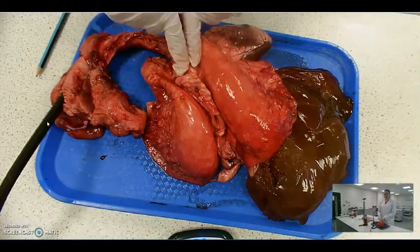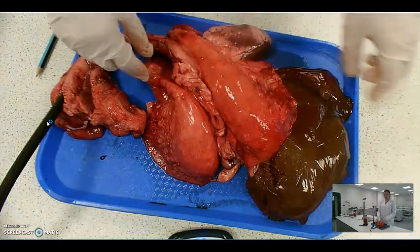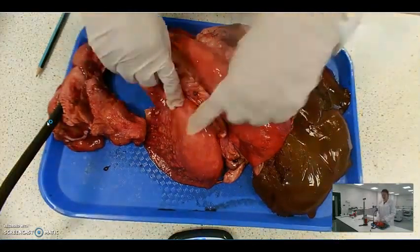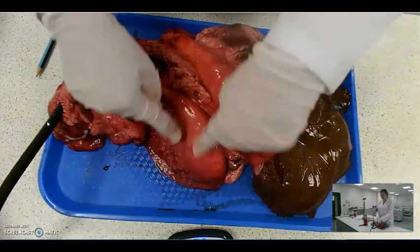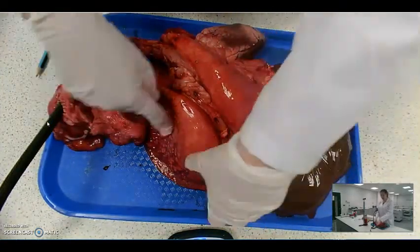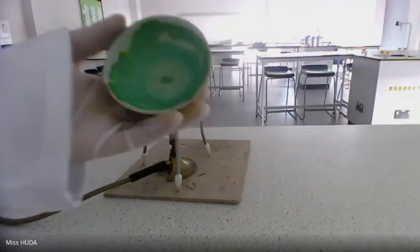So we've got two big tubes, one into each lung, and these are the bronchi, and then it splits off into lots of smaller tubes which are bronchioles and ends up at the crystals like this.